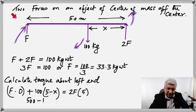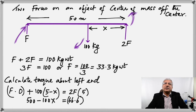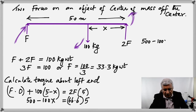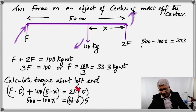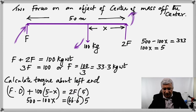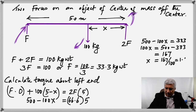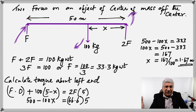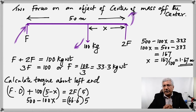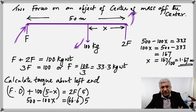Now it's just math — but be careful with the algebra. Distribute to get 500 minus 100x. On the right side, 2 times 33.3 is 66.6, and 66.6 times 5 gives 333. Rearranging, you get x equals 1.67 meters. This makes sense: on a 5-meter plank, the middle would be 2.5 meters, and the center of mass is off to one side. You must understand how the two conditions were applied to solve this — don't just memorize the technique.